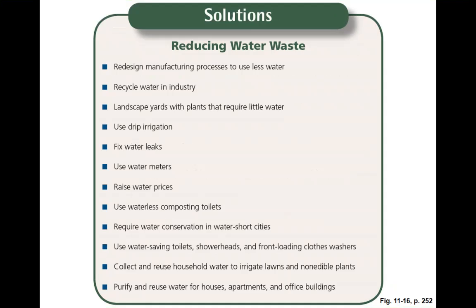If we redesign manufacturing processes to use less water, recycle wastewater from industry, landscape with low-water-need plants, use drip irrigation, fix leaks, use water meters, and raise water prices — that last point can't be overemphasized. We undervalue water, and one of the simplest things we could do to drive the biggest change in human behavior is make it more expensive. Use waterless composting toilets and require water conservation in water-short cities. Cape Town, South Africa was on the verge of cutting off water to everyone because of waste — but the city cut its water usage in half in just two years. If people are pushed, they can do these things.